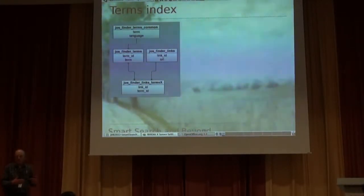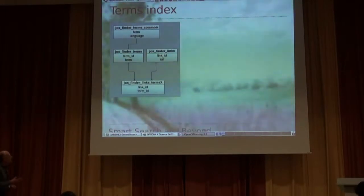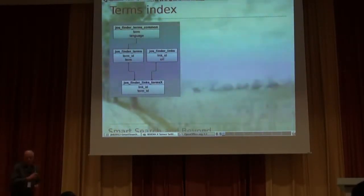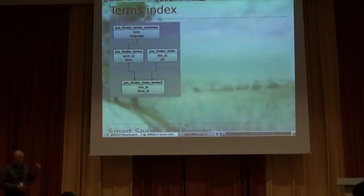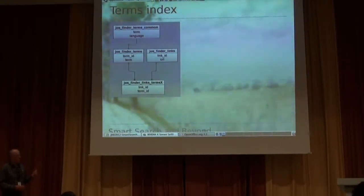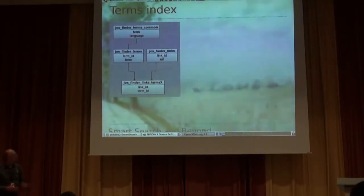There's a many-to-many relationship between those two tables — one term can be in many content items, and a content item can have many terms. So at the bottom we have a resolving map which resolves that many-to-many relationship. The X on the end there indicates that it's actually broken up into 16 separate tables, and that's for a performance reason. On large sites, it can run to millions of entries, and once you get that many entries, inserting and deleting is quite slow. So we separated it out into 16 tables just to improve the performance.